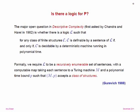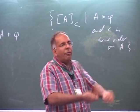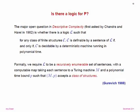Gurevich says: let's be very generous about what it means to be a logic. Any recursively enumerable set of sentences, as long as there's a computable translation which takes any sentence and gives you a polynomially clocked Turing machine accepting a class of structures — where 'accepts a class of structures' means it's invariant under the equivalence relation — and every polynomial time property of structures should be obtainable through this translation.